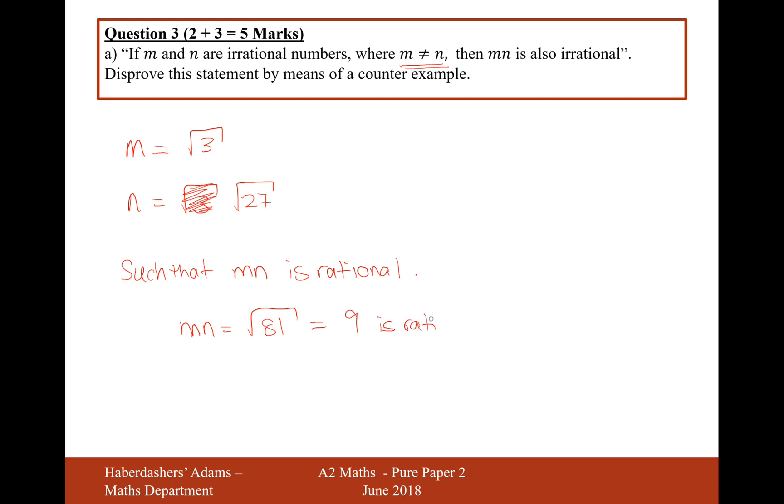There we are. That's our counter example for disproving this statement, that we can have two different irrational numbers, the square root of 3 and the square root of 27, and they will multiply together to make a rational number.